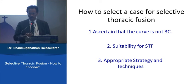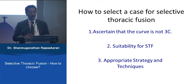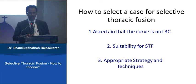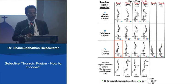There are three principles before performing selective thoracic fusion. First, ascertain that the curve is indeed a Lenke 1C and not a 3C — meaning it is a primary thoracic curve and not a double major curve. Second, assess clinical and radiological suitability. Third, during surgery, avoid two common mistakes that occur with selective thoracic fusion.